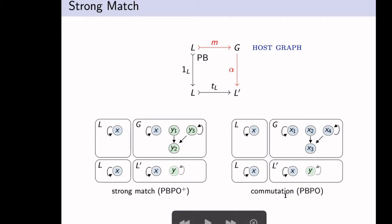If you contrast this with commutation, which is the condition for PBPO, you're in principle allowed, especially since this is a terminal subgraph, you could map all of G onto this pattern part over here. And as I will show with examples later, especially when matching is non-deterministic, we think strong matching is a useful restriction. If you are in control of the matching, then commutation is just fine and could even be convenient in some cases.